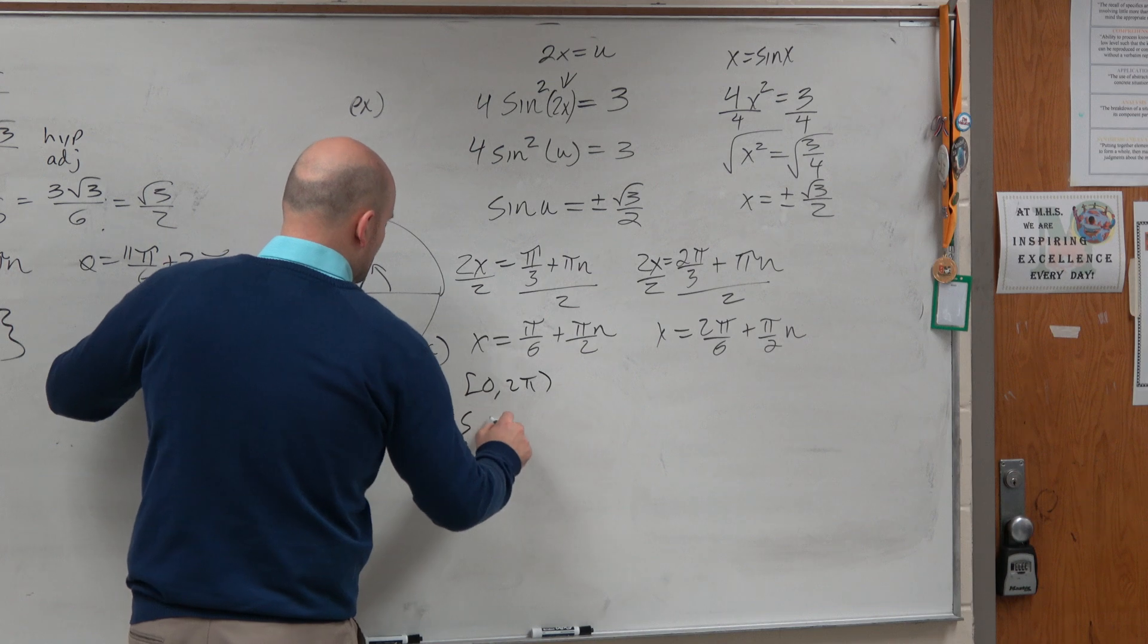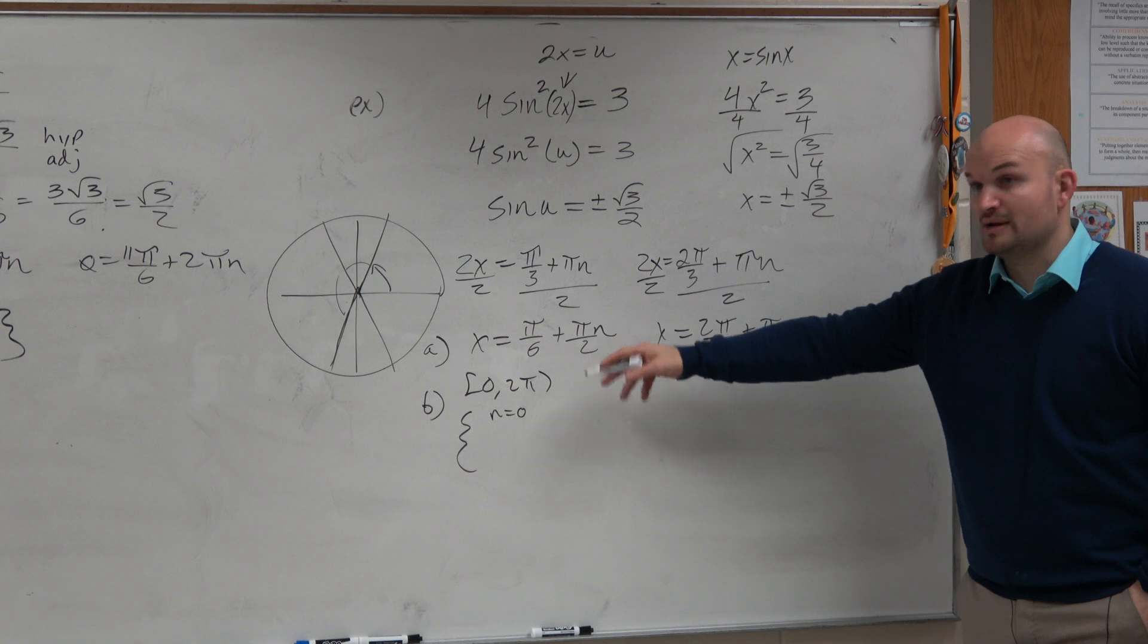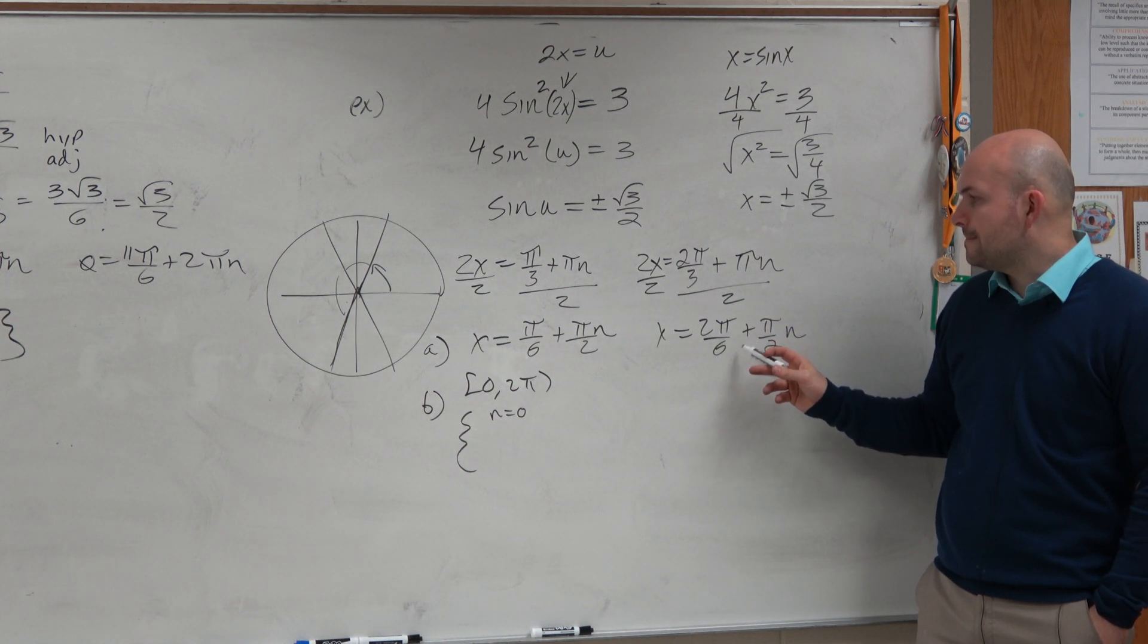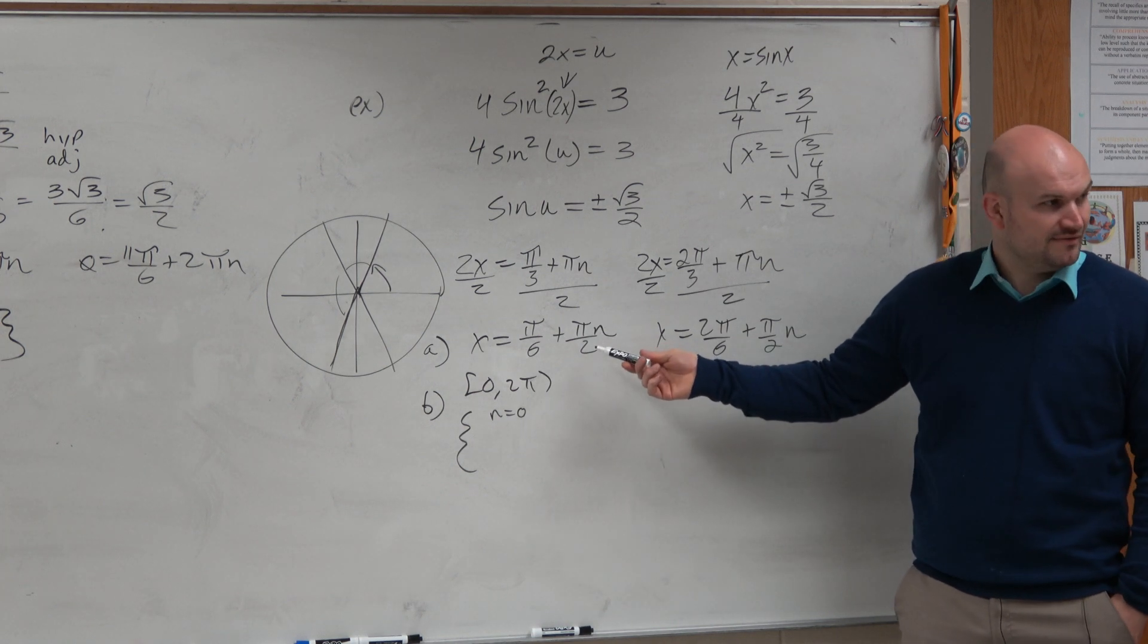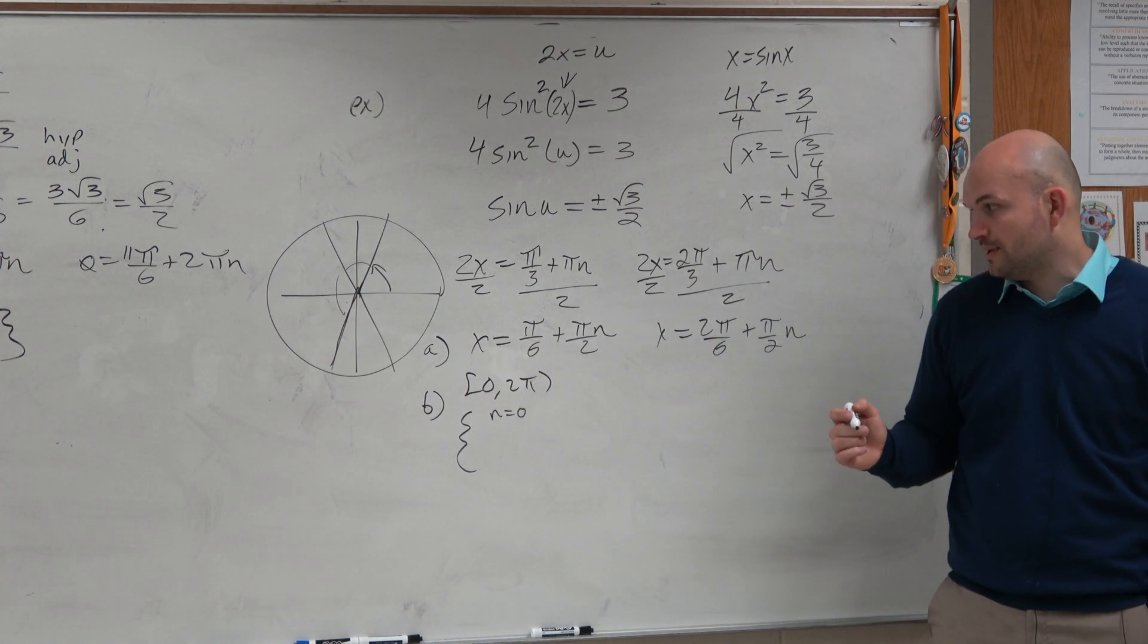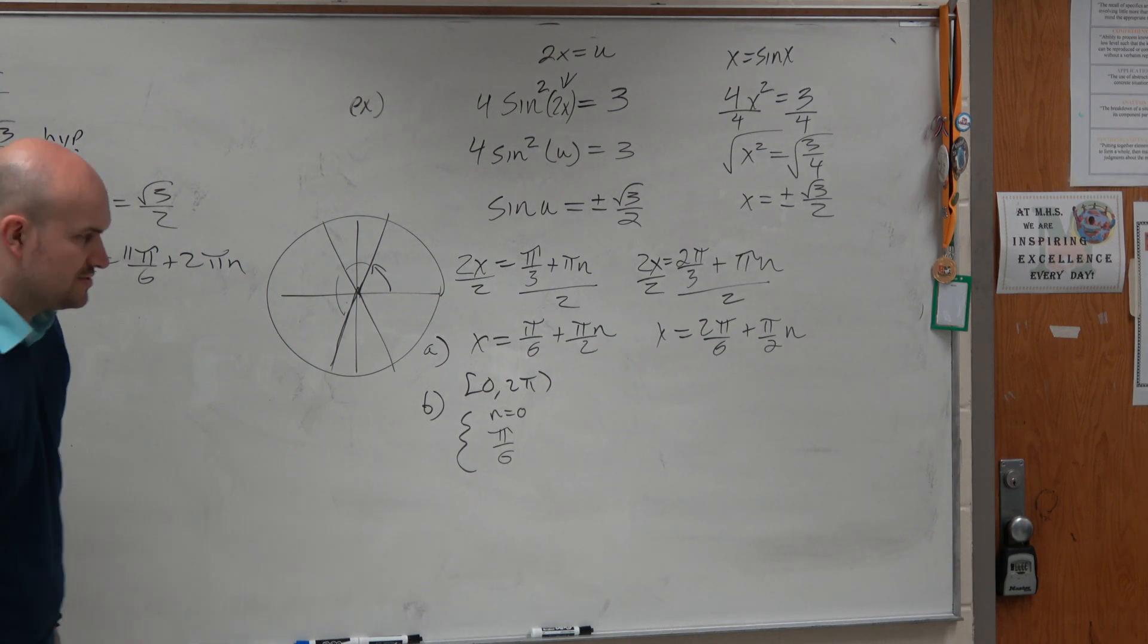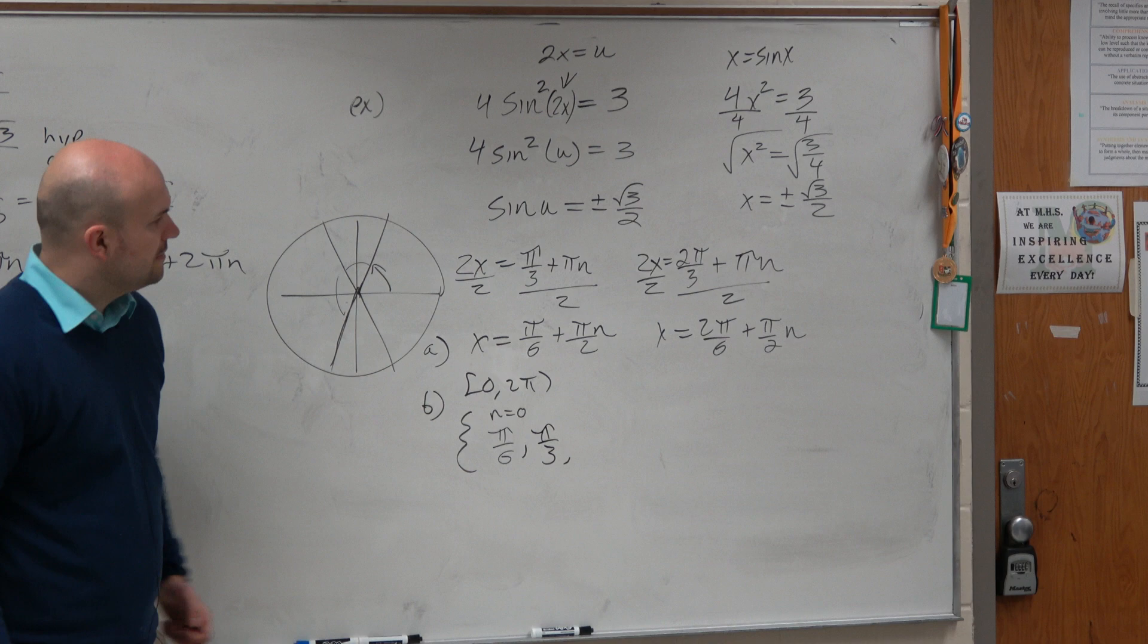So let's do between 0 and 2π. All right? And let's do the solution set. Let's do when n equals 0. So what I'm doing is this represents all the solutions. π over 6 plus π/2 times n. 2π over 6 plus π/2 times n, which is really π over 3. Now, let's just pick different values of n. Let's start with 0. We don't want to pick negative, because negative would give us two negative values. And we need to find answers or angles between 0 and 2π. So if I plug in 0, I get π over 6. Here, I would get 2π over 6, which is simplified to π over 3.